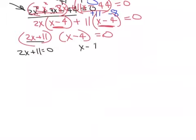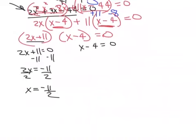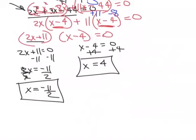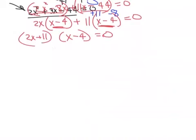Set that equal to 0, and this one equal to 0. Minus 11, 2x equals negative 11. Divide by 2, x equals negative 11 over 2. Over here, same thing. Plus 4, x equals positive 4. There's your answer for problem number 5.